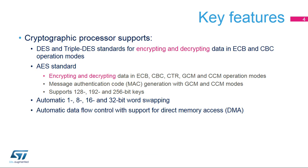The Cryptographic Processor supports the Data Encryption Standard, or DES, the Triple DES, and the Advanced Encryption Standard, or AES, in several operating modes described in the next slides. Both standards are part of the block cipher algorithm family. DES uses a 56-bit key, while AES, which is more robust, can be used with a key of 128, 192, or 256 bits. A full data flow can be automated with the help of the Direct Memory Access Controller, or DMA.